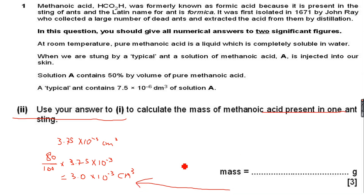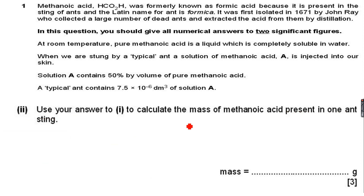The next part says to use your answer to question 1, which was 3×10⁻³ centimeter cube, to calculate the mass of pure methanoic acid injected.